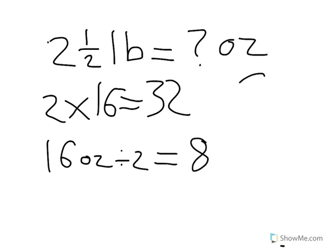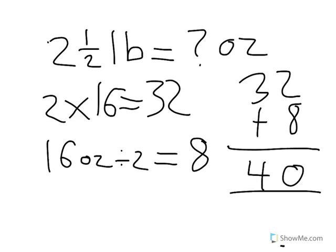So then we do thirty-two ounces plus eight ounces, which equals forty ounces. So our answer is forty ounces. Thank you.